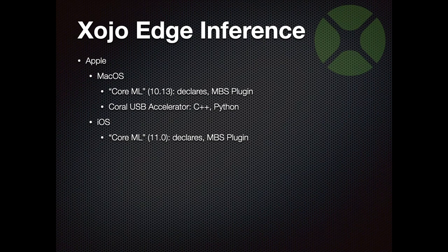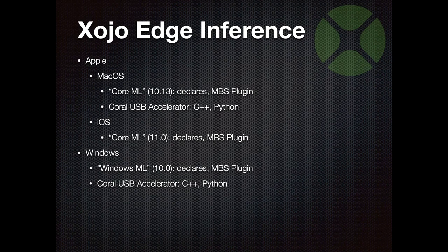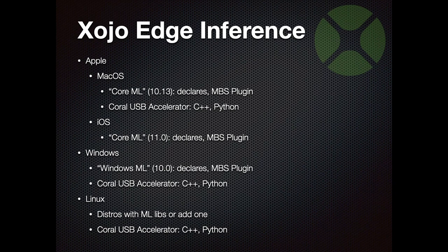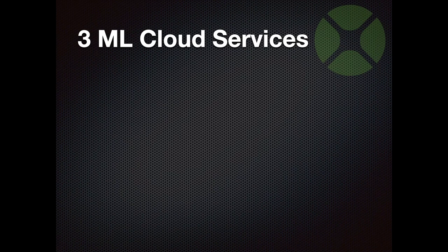For iOS starting with version 11, you can also use declares or the Monkey Bread plugins. For Windows starting with Windows 10, Windows ML is built in - again you can use declares but it's much easier to use Christian's plugin, and you also have the option of the Coral USB device. For Linux, there are distributions with machine learning libraries built in, or you can always add one, and again the Coral USB accelerator is available.